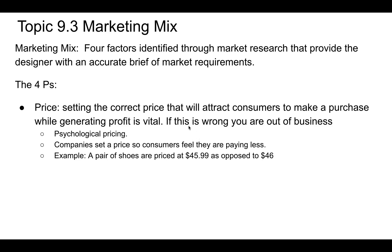Psychological pricing is where companies set prices to make you feel like you're paying less. The classic example is the .99 — they'll say it's $45.99 as opposed to $46. It might as well be $46, but in your mind it sticks at $45. Similarly, selling something at $999.99 seems less expensive to people than $1,000, even though it's essentially the same.